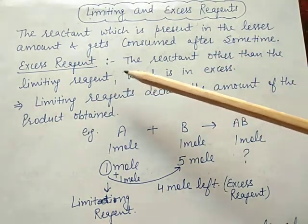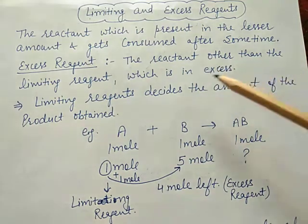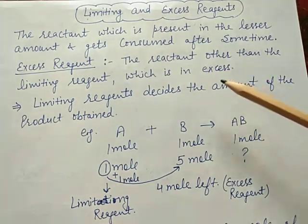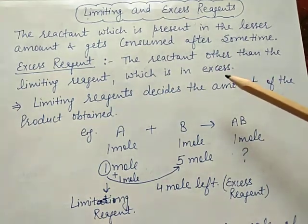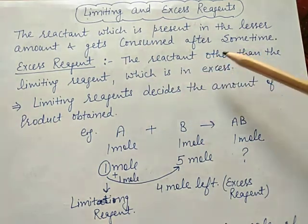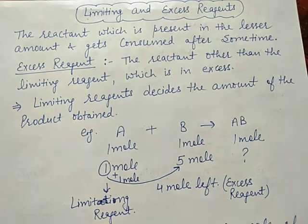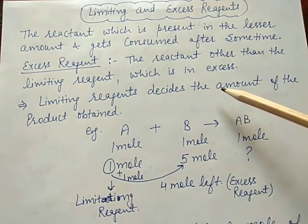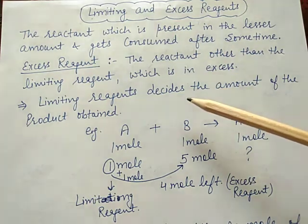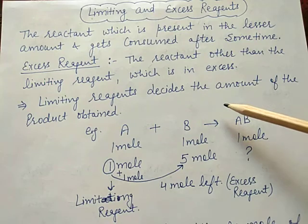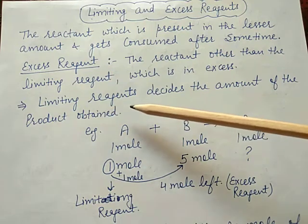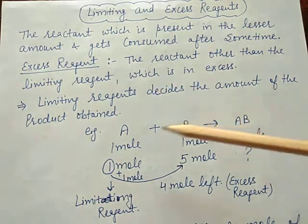The excess reagent means the reactant other than the limiting reagent which is present in excess form — this is called the excess reagent. The remaining amount of excess reagent is calculated by subtracting the consumed amount from the available amount. In stoichiometric calculations, the limiting reagent decides the amount of product formed.